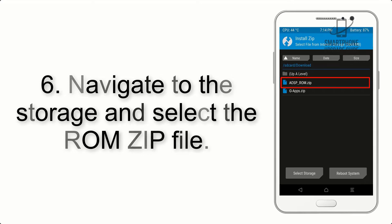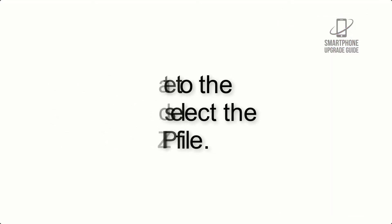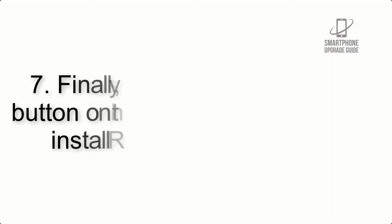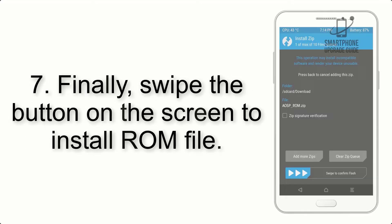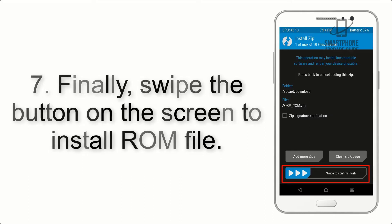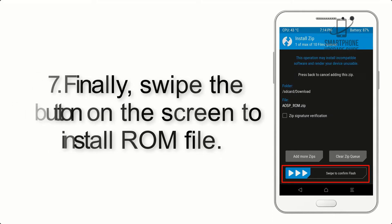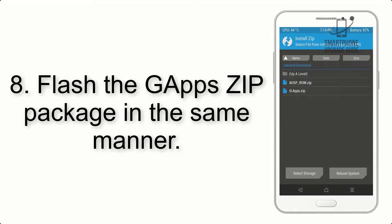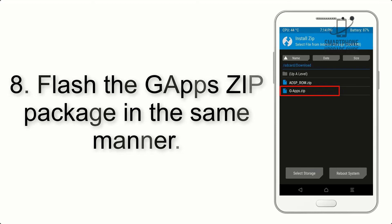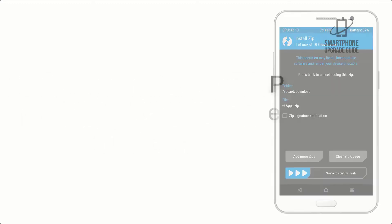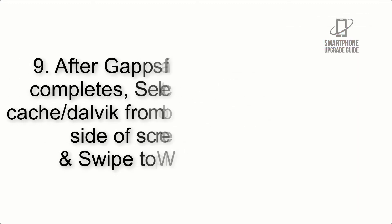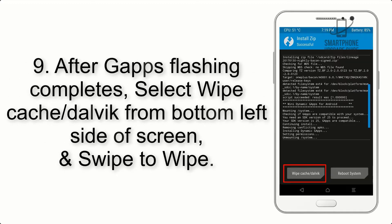Step 6: Navigate to the storage and select the ROM zip file. Step 7: Swipe the button on the screen to install the ROM file. Step 8: Flash the GApps zip package in the same manner.